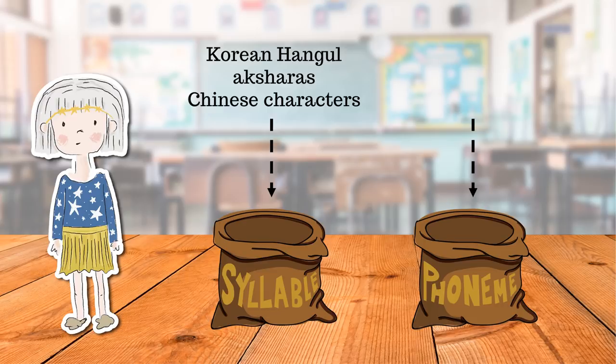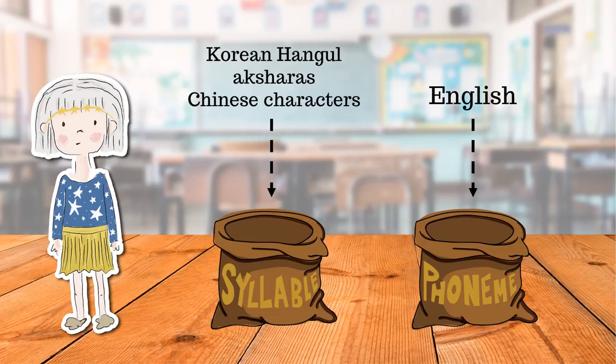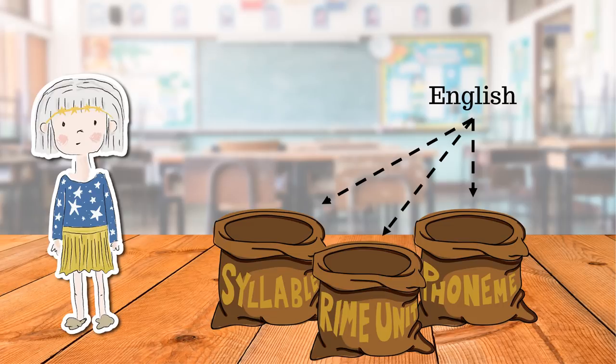Some other languages may emphasize the phoneme level. For example, in many African languages such as Chinyanja, the relationships between letters and sounds are consistent, so awareness of phoneme sounds is important. In English, the phoneme level is important, but so is the syllable level and other units such as the rhyme unit.